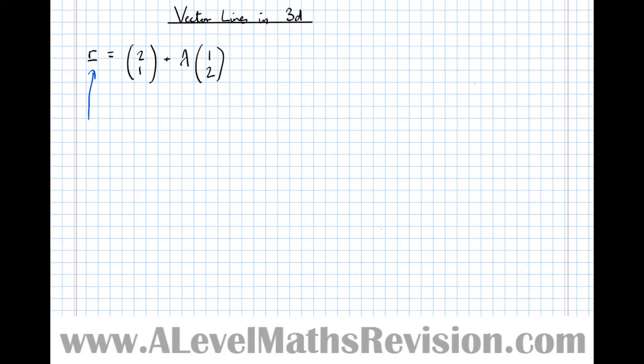So let's take, in two dimensions, the vector equation of a line R equals (2,1) plus lambda (1,2). So what we've got there is the vector equation of a line. R, the first symbol, just means x, y, so it refers to any point on the line.